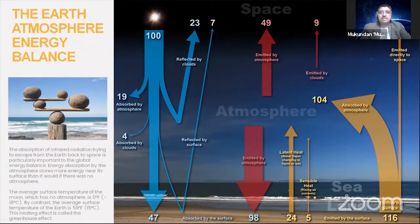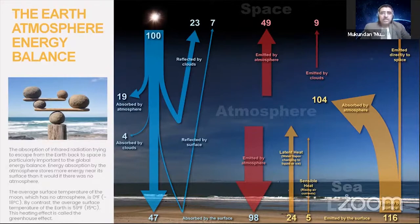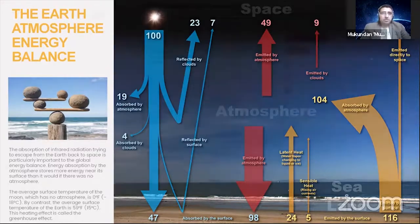Similarly at the Earth level, 116 units are emitted by the surface of the Earth, balanced out by the heat coming in. We have somehow disturbed that balance, and we'll get to see why.